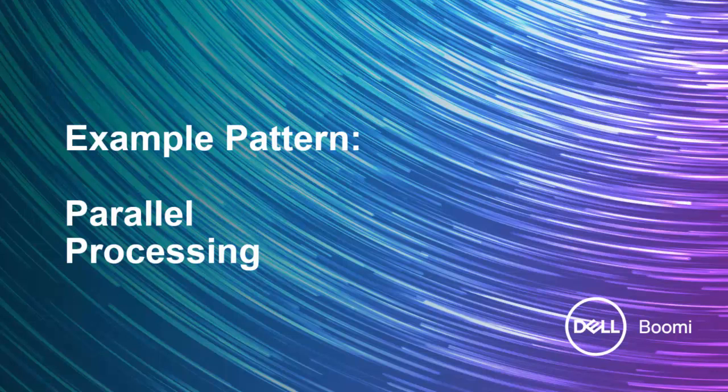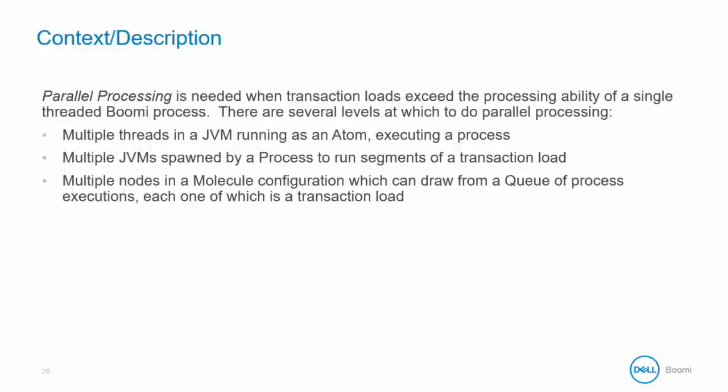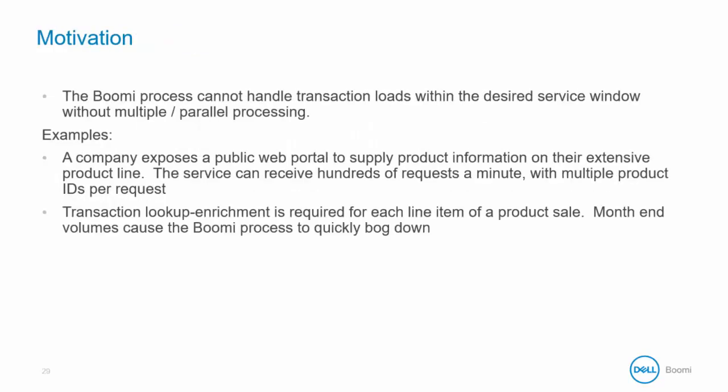The last integration pattern we will look at is parallel processing. Parallel processing is needed when transaction loads exceed the processing ability of a single-threaded Boomi process. There are several levels at which to do parallel processing: multi-threads in a JVM runtime executing a process, multiple JVMs spawned by a process to run segments of a transaction load in parallel, and multiple nodes in a molecule configuration which can draw from a queue of process executions. The motivation is to push data across more threads or resources in order to decrease the processing time.